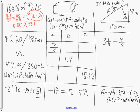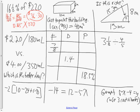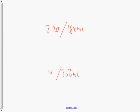The fourth question compares $2.20 for 180 mL versus $4.00 for 350 mL. We're going to compare them using unit rates per 100 milliliters. There are three ways we can solve it: the algebraic method, the division method, or the unit rate method. For the first one, if I divide by 1.8 it'll get me to 100.